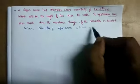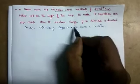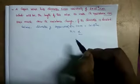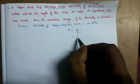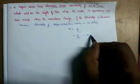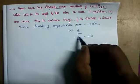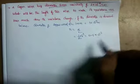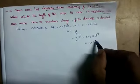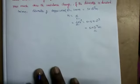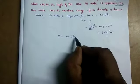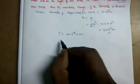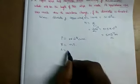The radius r equals d divided by 2, so r equals 0.5×10⁻³ meters, which equals 5×10⁻⁴ meters. The resistivity rho equals 2×10⁻⁸ ohm-meter, and the target resistance R equals 10 ohms. We need to find the length l of the wire.